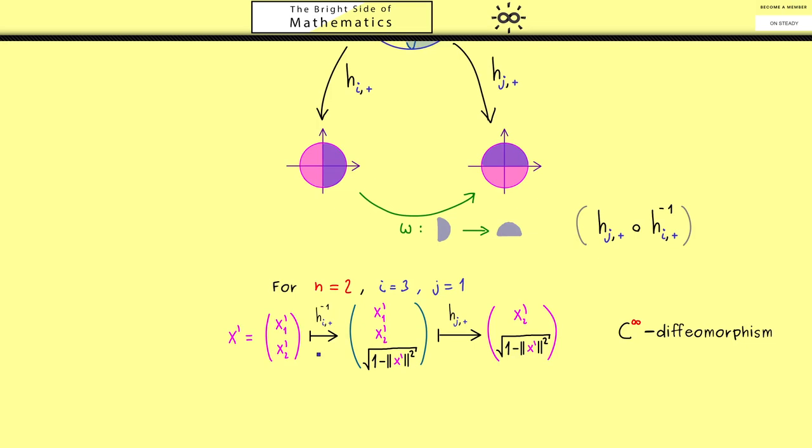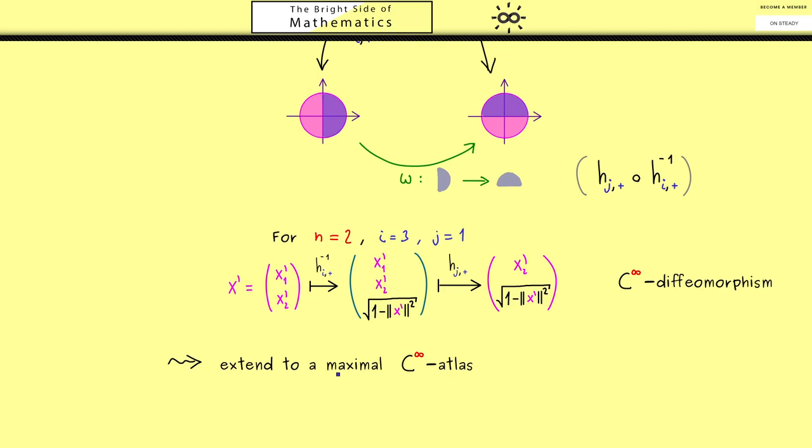Of course this is a very important conclusion here. And you should see this works no matter which dimension we choose and which combination of i and j we choose. Or to put it in other words all transition maps ω are C∞-diffeomorphisms. So what we have is a C∞-atlas. Therefore the only thing that is left to do is to extend this C∞-atlas to a maximal C∞-atlas. And then by definition we have a C∞ smooth manifold. And with this we have seen our first example of a smooth manifold and this was also not so trivial.